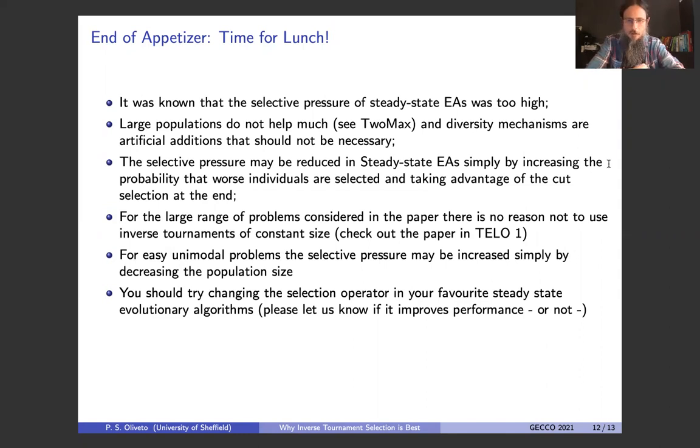I invite you to read the paper, because I've only given you the ideas behind the paper. In the paper, we've got lots of problems to investigate, where always using inverse tournaments of constant size consists in an advantage in performance. Some of you may be worried that selecting worse individuals can slow the optimization process. Well, if you've got an easy unimodal problem and you want to increase selective pressure to be faster, you just need to decrease the population size. If the problem is easy, you don't need a large population. The last thing I would like to ask you is why don't you try changing the selection operator in your favorite steady state algorithm and maybe on your favorite applications and your important applications and see what happens. And please let us know if it improves performance a lot. Thank you.